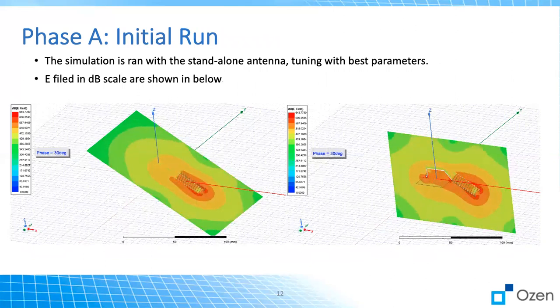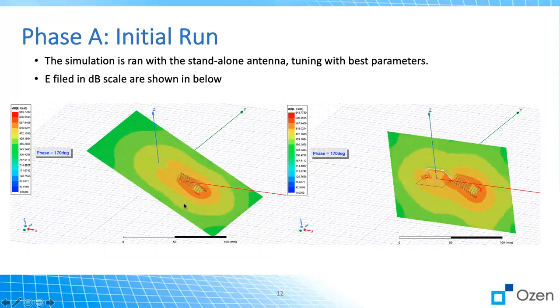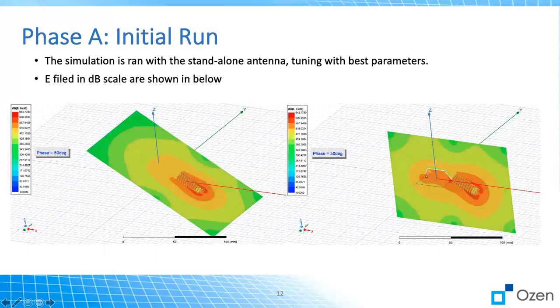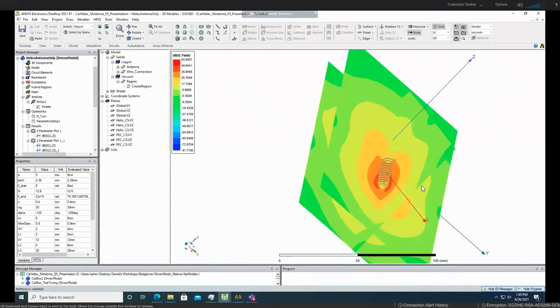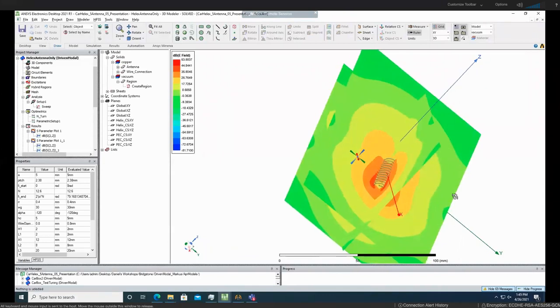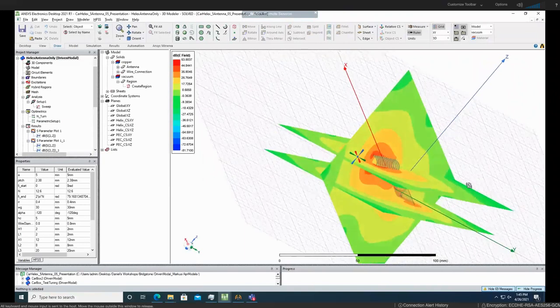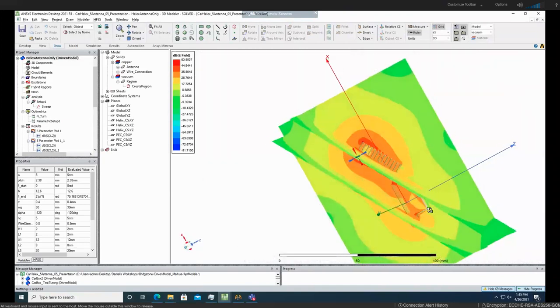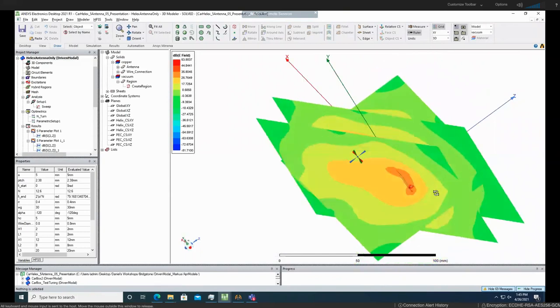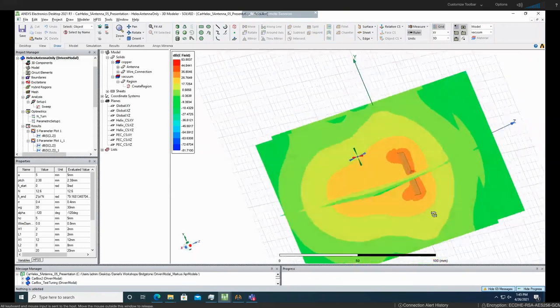As you can see, here is the initial run that we made. These are the same antenna, just different planes. And we can see the E field here. And if you want to have a better visualization, we have the model here. We can turn it around. So you have a good feeling of the E field in this area.